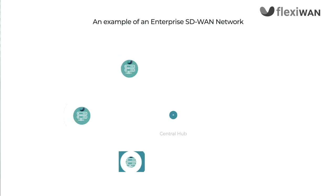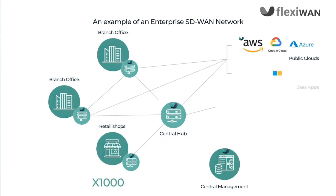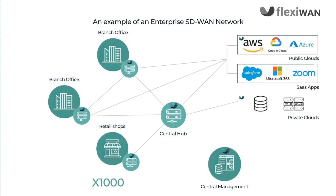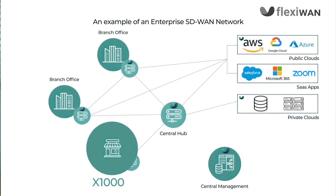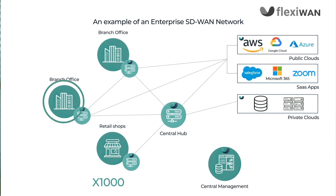Let's take a look at a typical enterprise network — an example of an enterprise network. This is just an example: I'm showing here a large retail company with around a thousand shops. They have several branch offices, and the network architecture in this case gives you direct connectivity between the different branch offices.